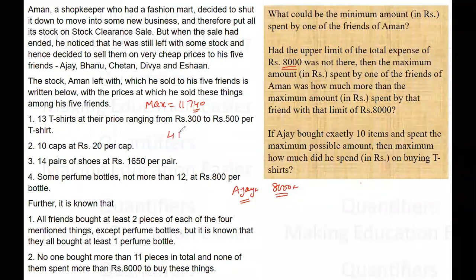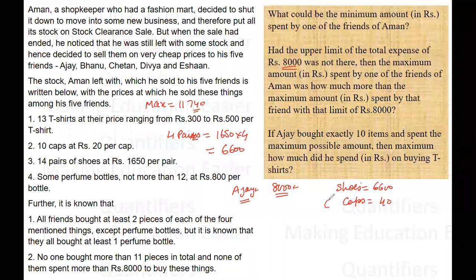Let's say he buys four pairs of shoes. The cost for four pairs at 1650 each comes out to be 6600. For caps, the person will be paying 40 rupees — two caps, four pairs of shoes. He also needs at least one bottle of perfume, which costs 800 rupees. Up to this point, he has spent 7440 rupees total. The target amount is 8000, so the remaining amount is 8000 minus 7440, which is 560 rupees.